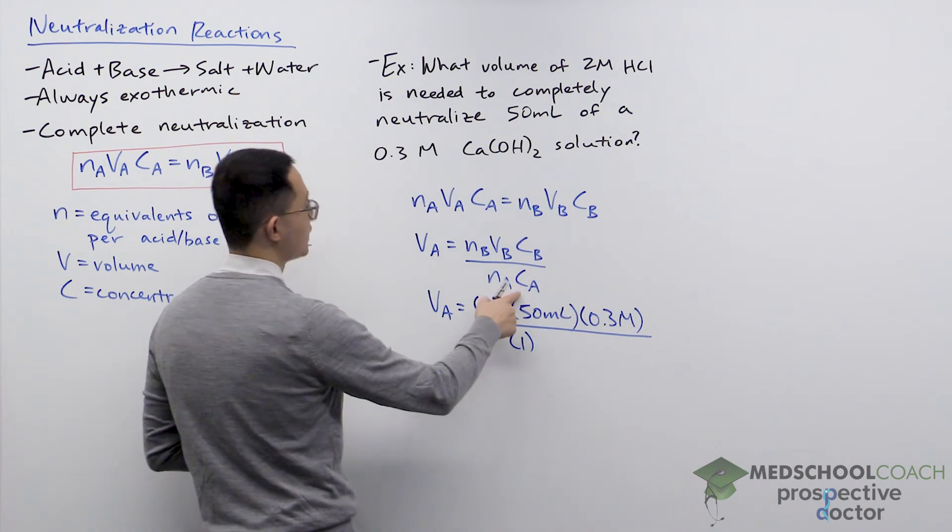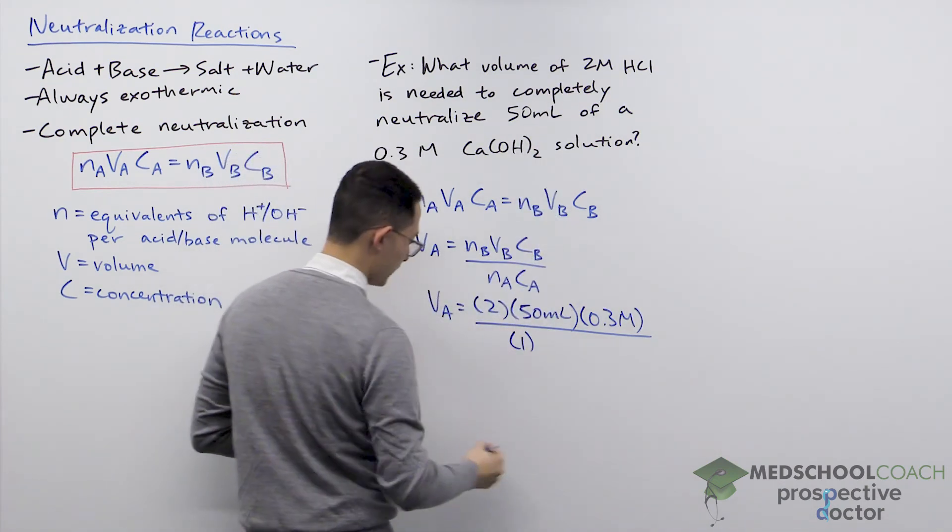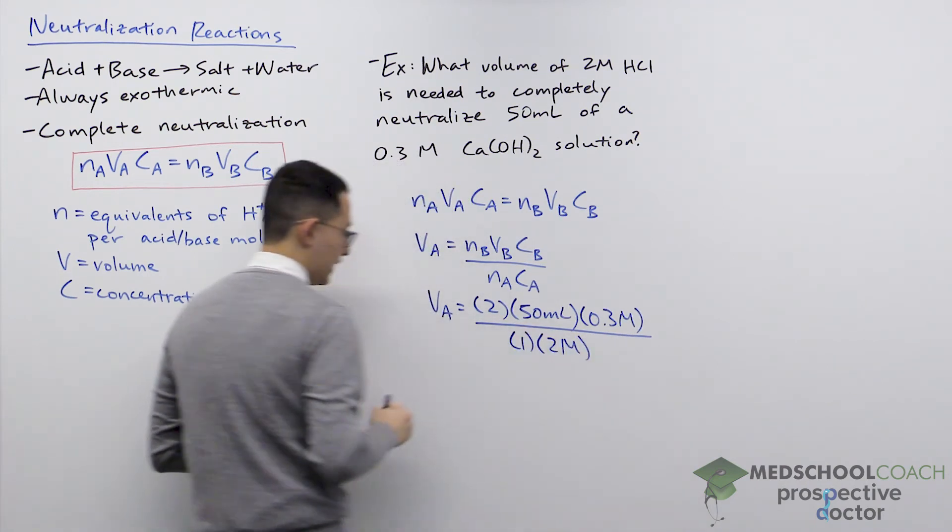We want the concentration of A. The concentration of A, they told us, is 2 molar. So we can go ahead and plug in here, 2 molar. And now we just essentially have to do the calculation.